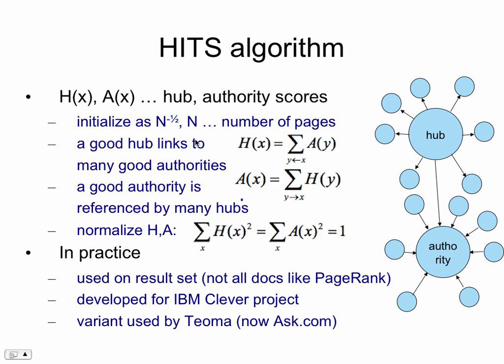So that's hubs and authorities — implemented in a way very similar to PageRank. In practice, when this was introduced it was used by Teoma, which later became Ask, which is still around. They did it not on the entire web but on the fly: you would run a query on Teoma, they would get a set of results, and then re-rank those results on the fly by computing hub and authority scores — just for the set of results, not the entire web. But you could just as well run the algorithm on the entire web and it produces sensible results.